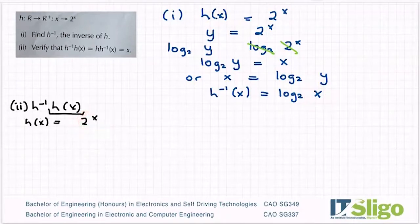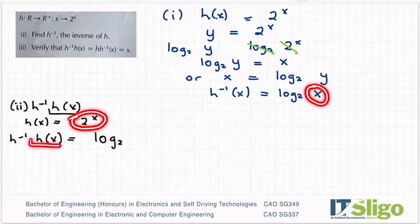Okay, so h^(-1)(h(x)) then becomes log base 2, and instead of x I'm putting in h(x). Okay, so it becomes 2^x.